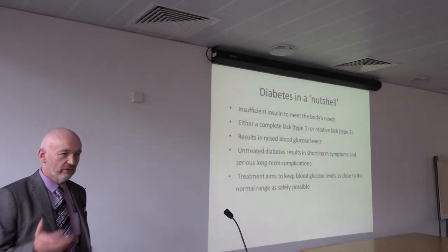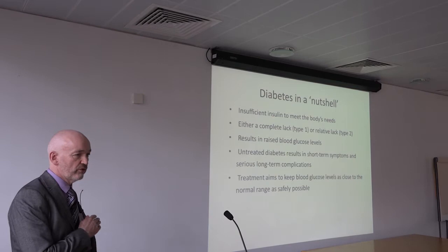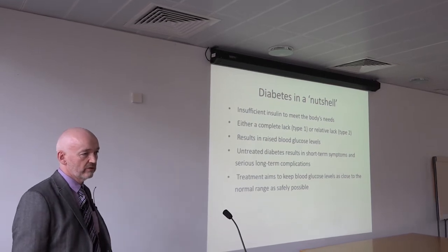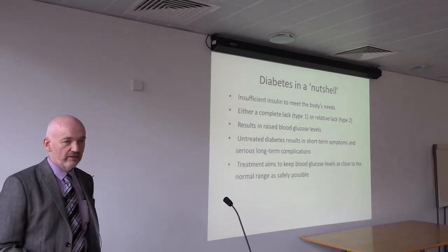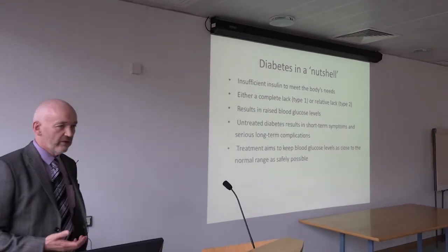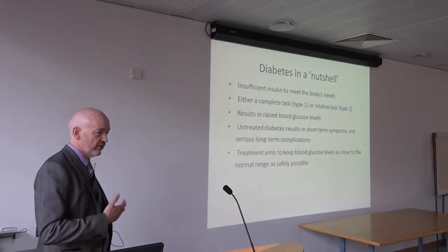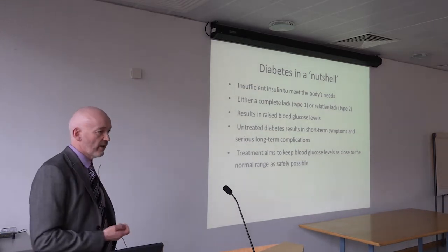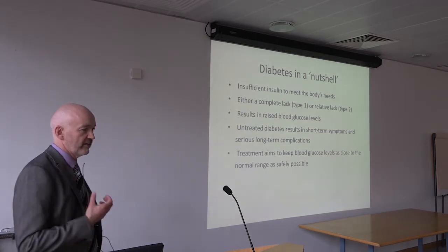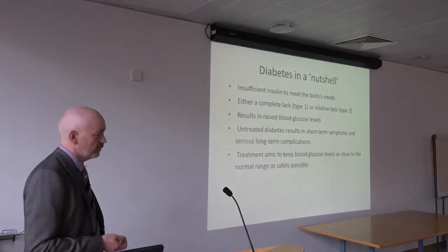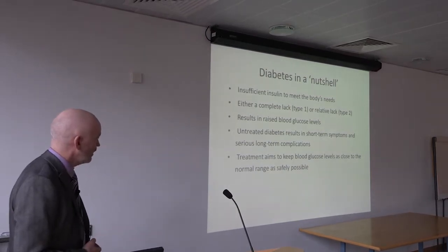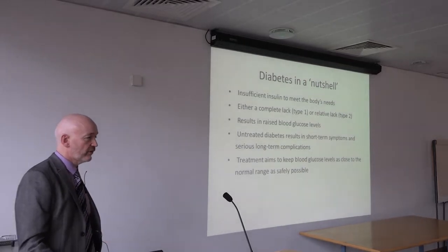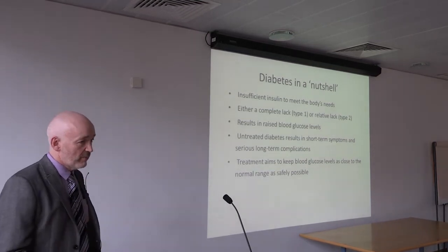In a nutshell, diabetes means there isn't enough insulin to meet the body's needs. The difference between type 1 and type 2: type 1 is due to a total lack of insulin — the cells that make insulin in the pancreas are completely destroyed, so those people absolutely must take insulin to maintain their lives. In type 2, the body becomes quite resistant to the insulin being made, so even though enough insulin is produced, it doesn't work well, and blood sugar eventually rises.